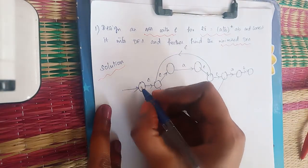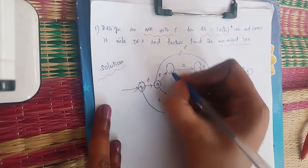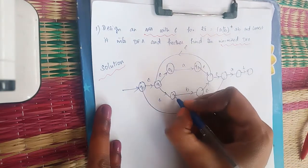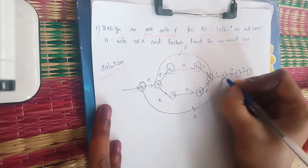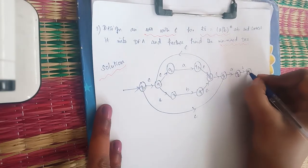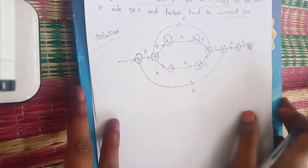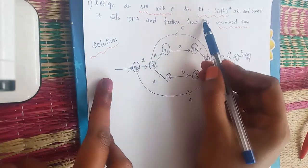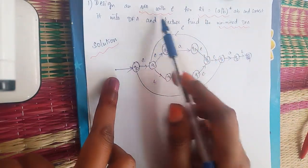Now we will name the states: Q0, Q1, Q2, Q3, Q4, Q5, Q6, Q7, Q8, and Q9. This is the way you draw the NFA with epsilon from a regular expression using Thomson construction.